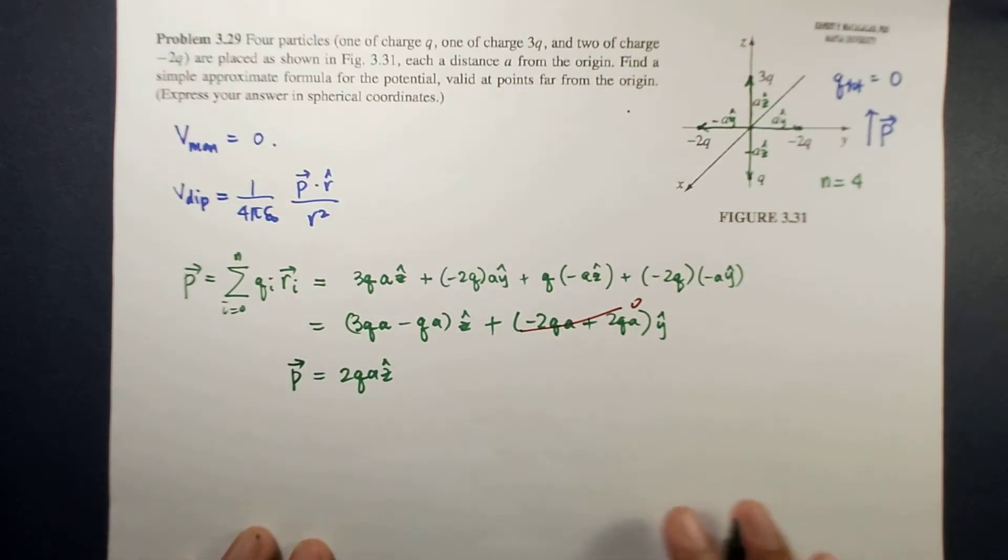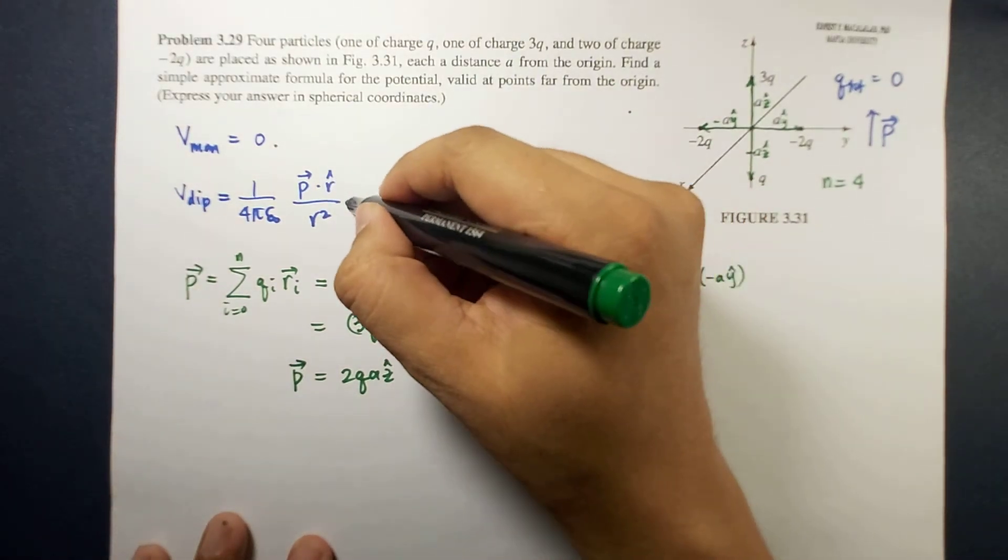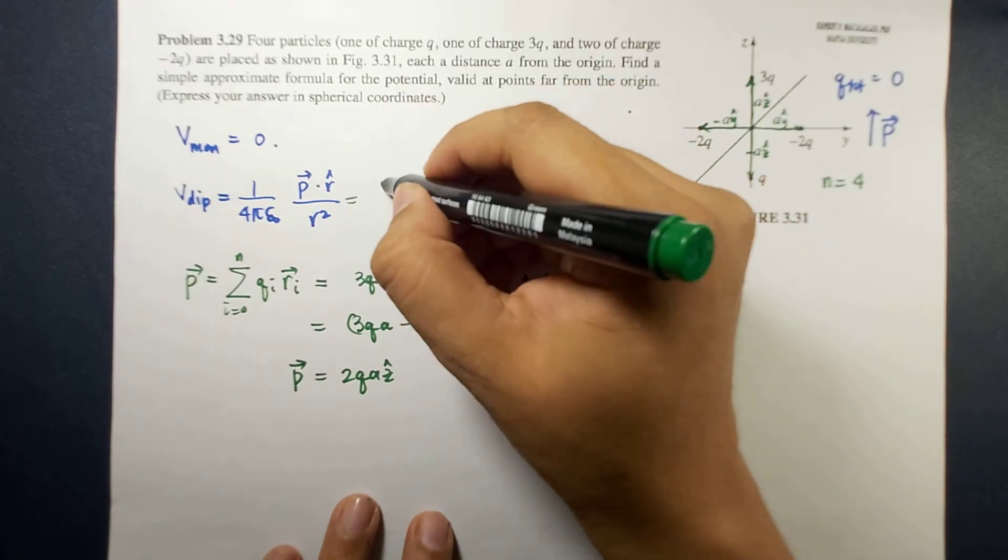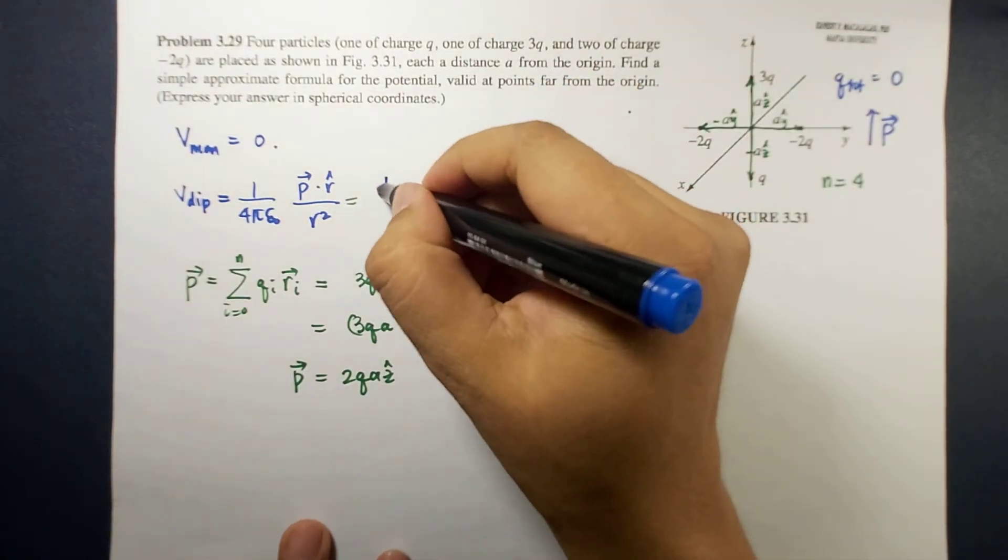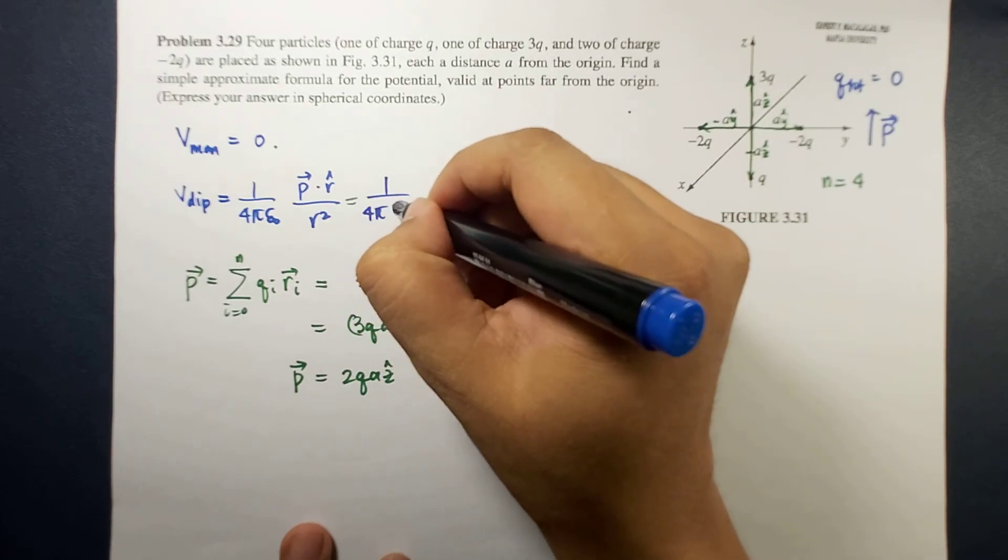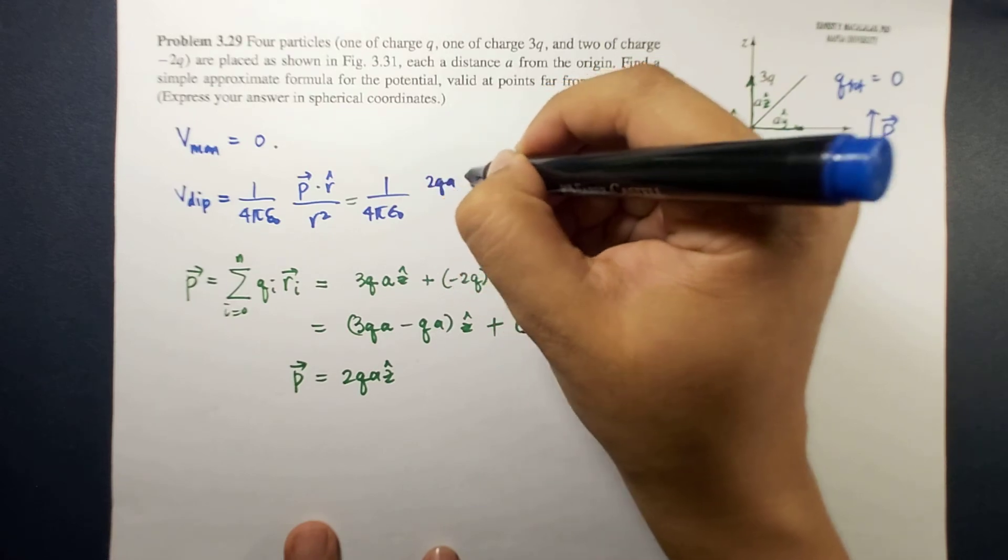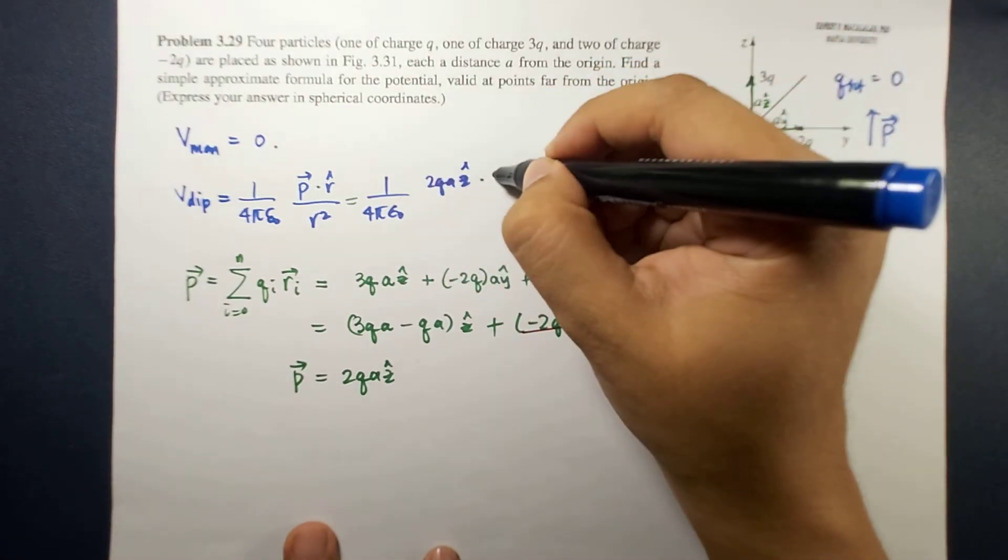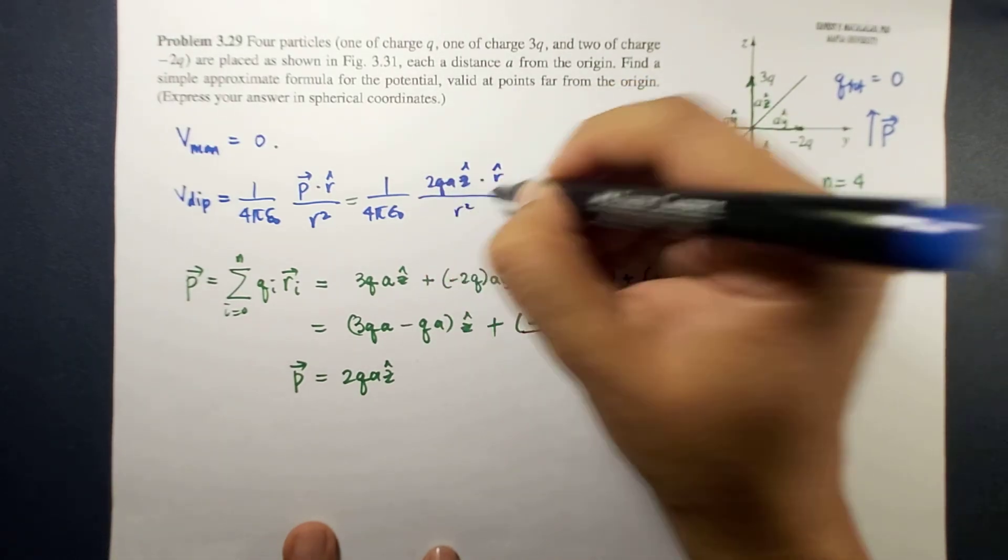Therefore, our dipole moment will be along the positive z direction. So the potential is now equal to 1 over 4π epsilon naught times p, which is 2qa z hat dot r hat over r squared.